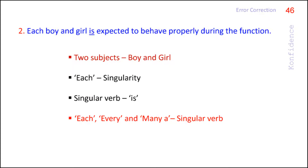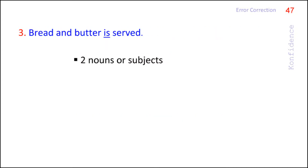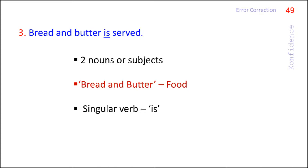Words like 'each,' 'every,' and 'many a' are followed by a singular verb. In the third sentence, the two nouns 'bread and butter' are considered as one thing — they stand for food. So it is singular in nature and hence the singular verb 'is' is used here.